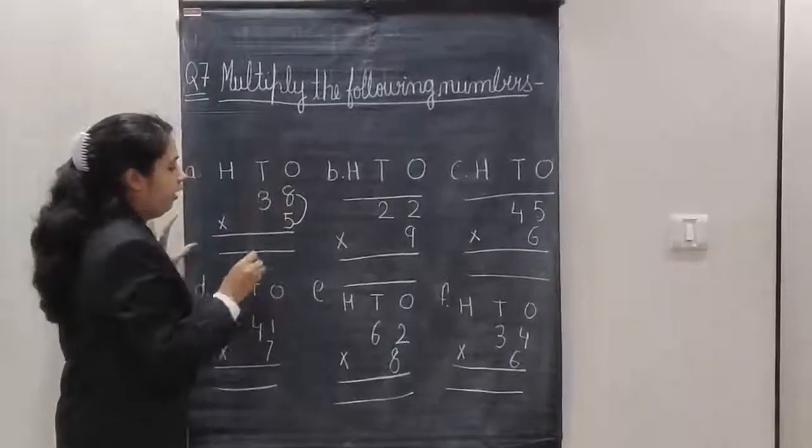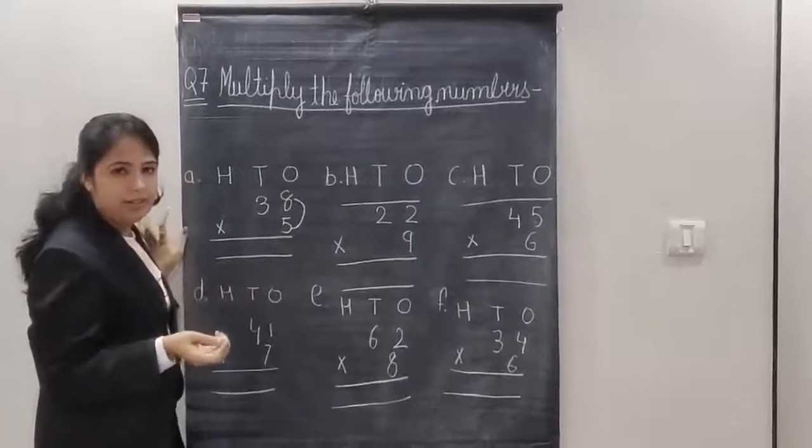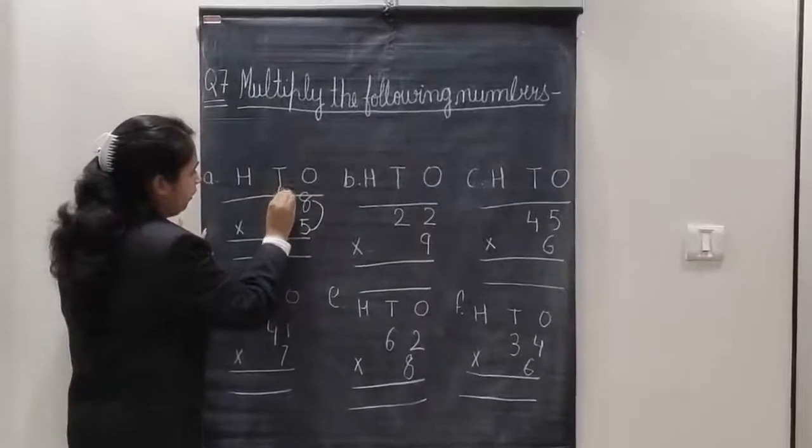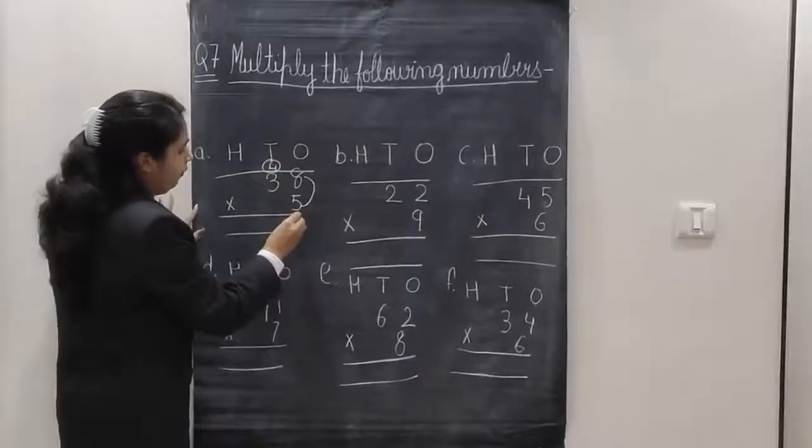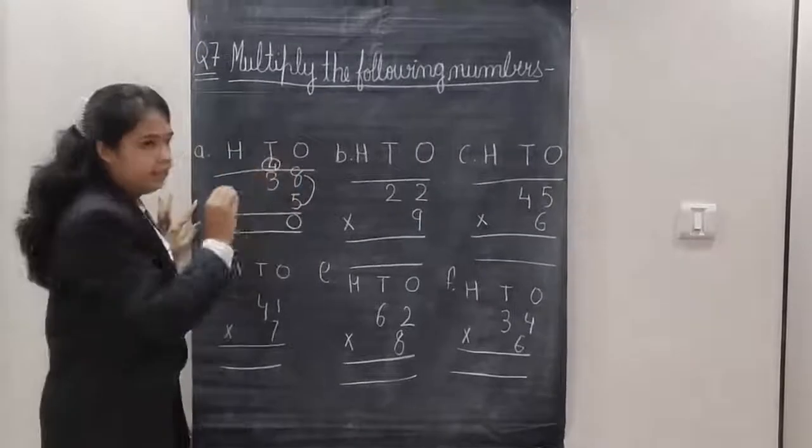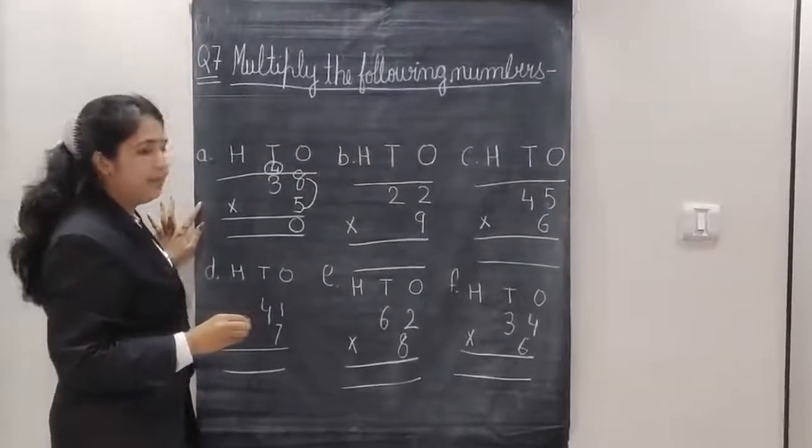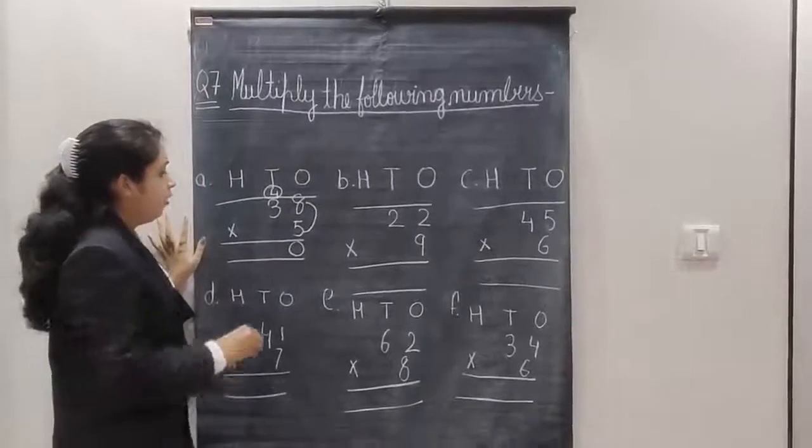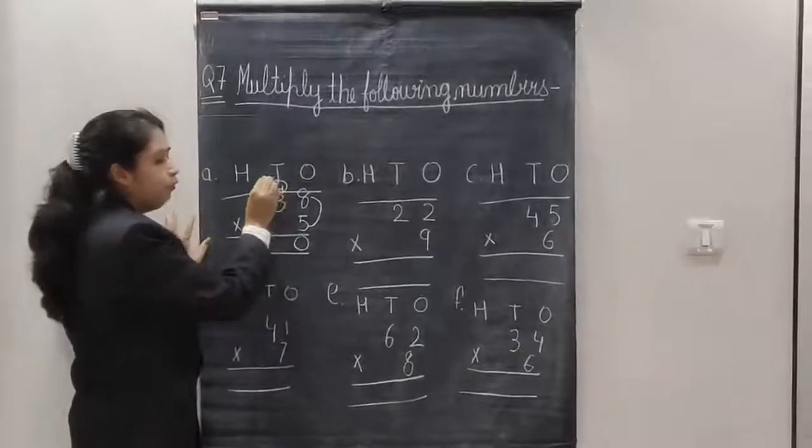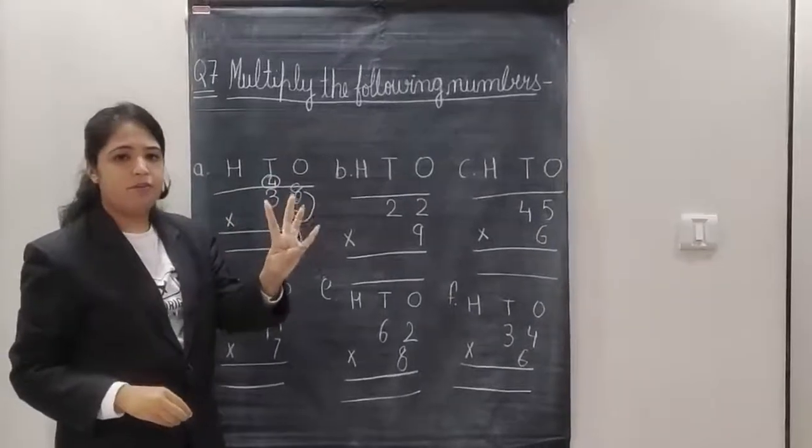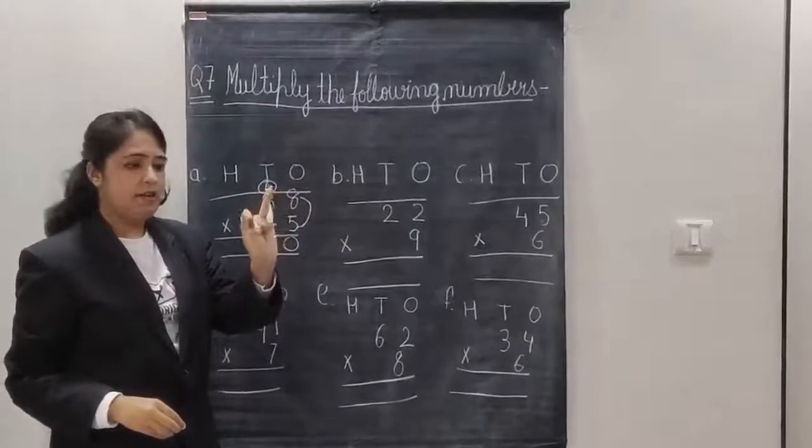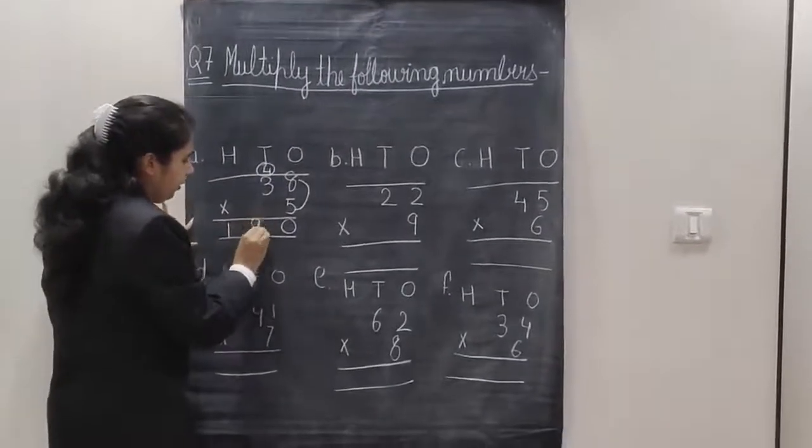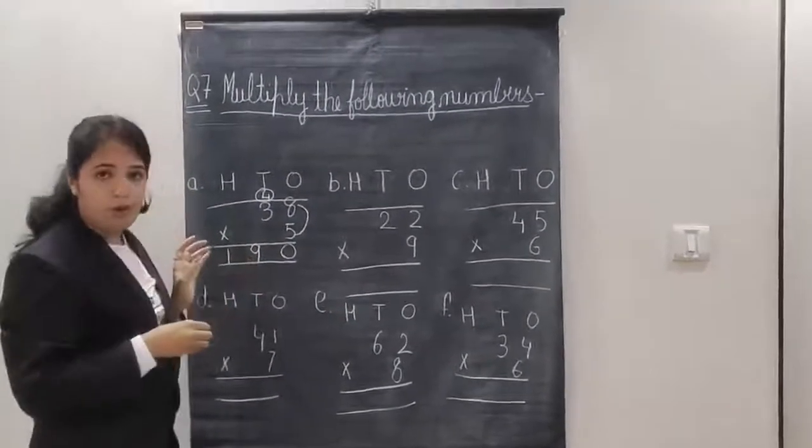5 eights are, 8 fives are or 5 eights are, the answer will be 40. So, forward number up, backward number down. 8 fives are 40. Now 5 threes are, 5 ones are 5, 5 twos are 10, 5 threes are 15. 15 in my mind, 4 on my fingers. After 15, 16, 17, 18 and 19. So, my answer is 190 is my product.